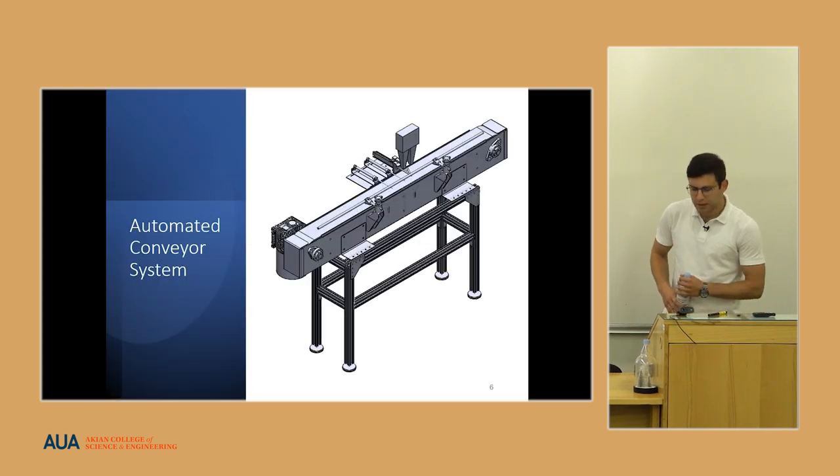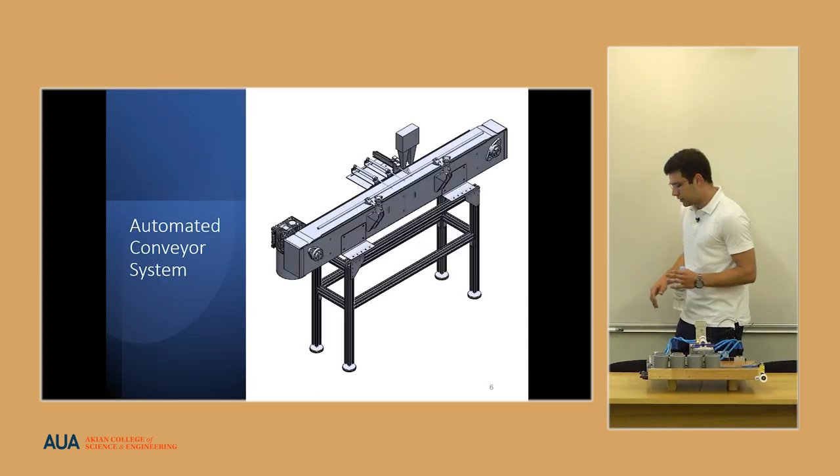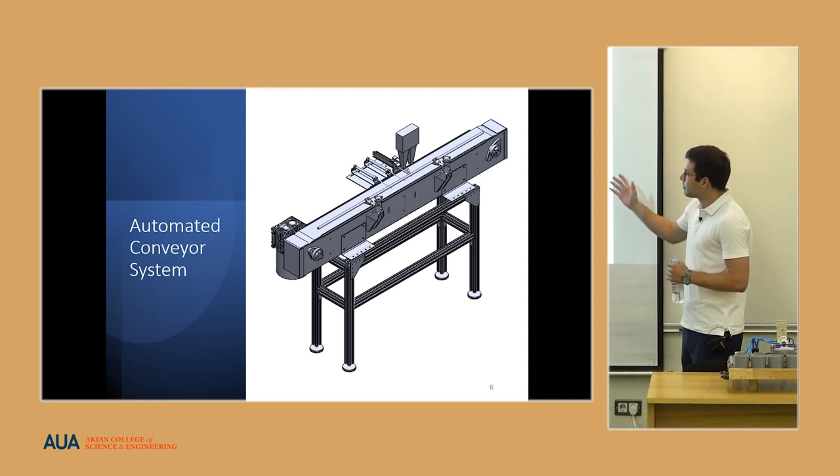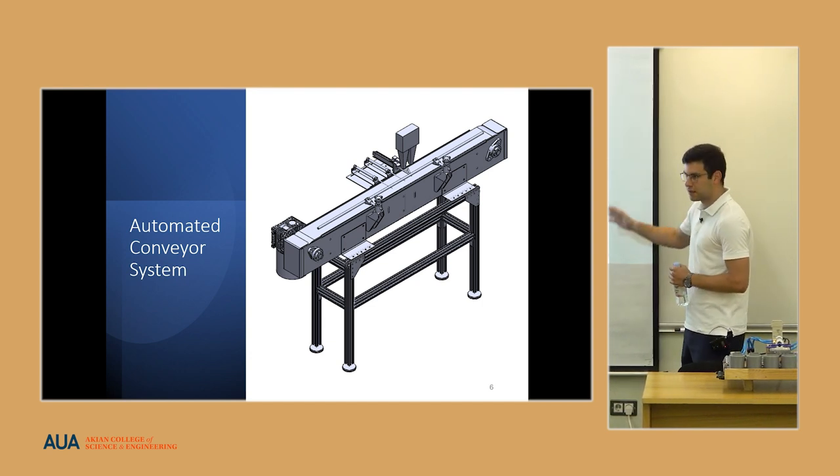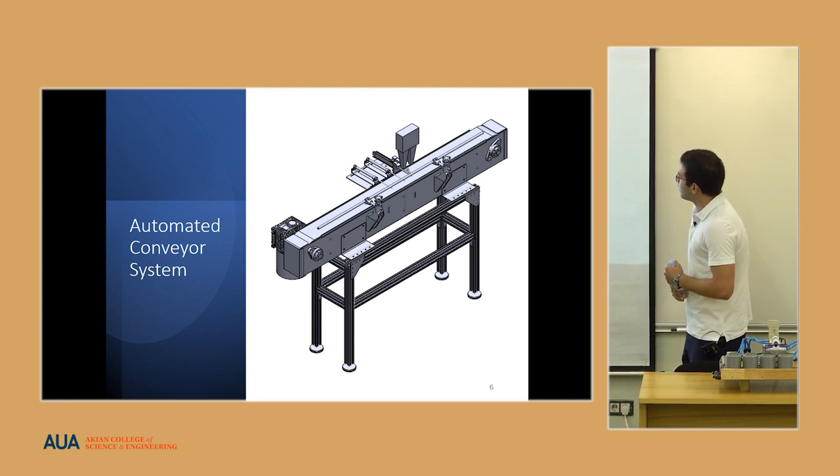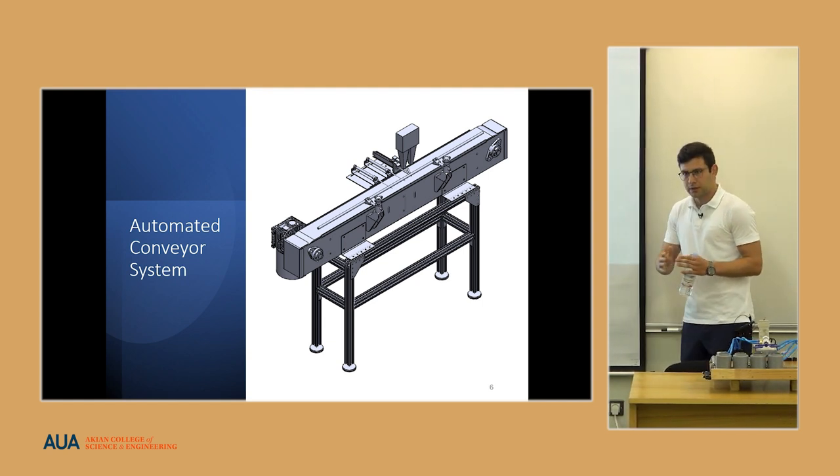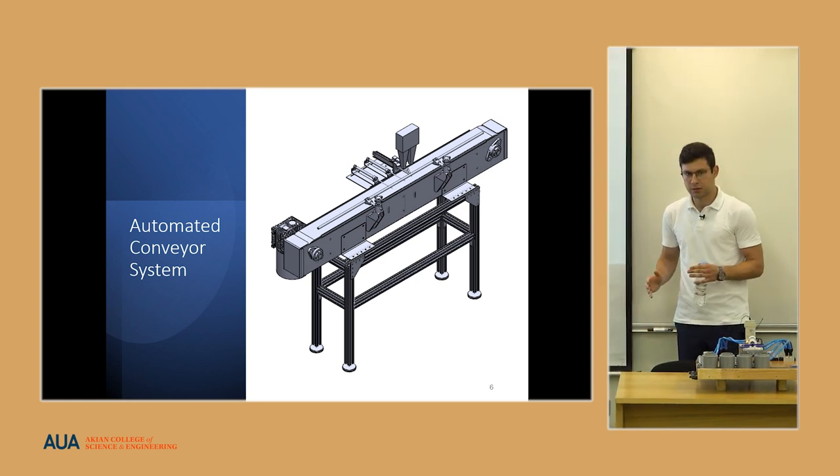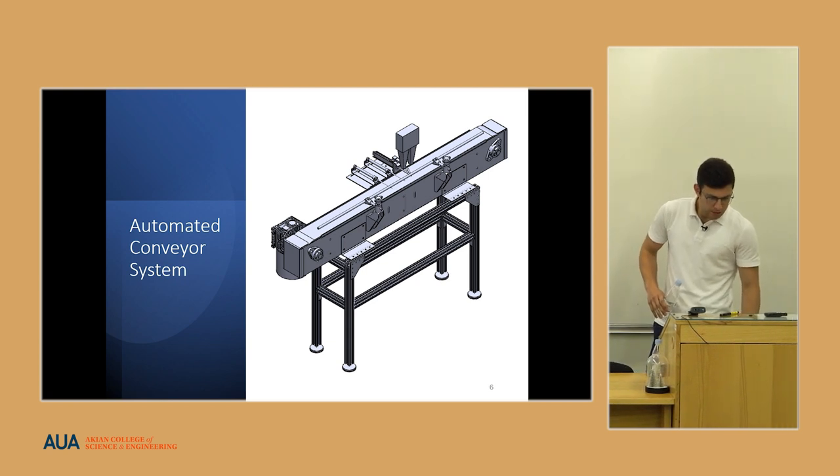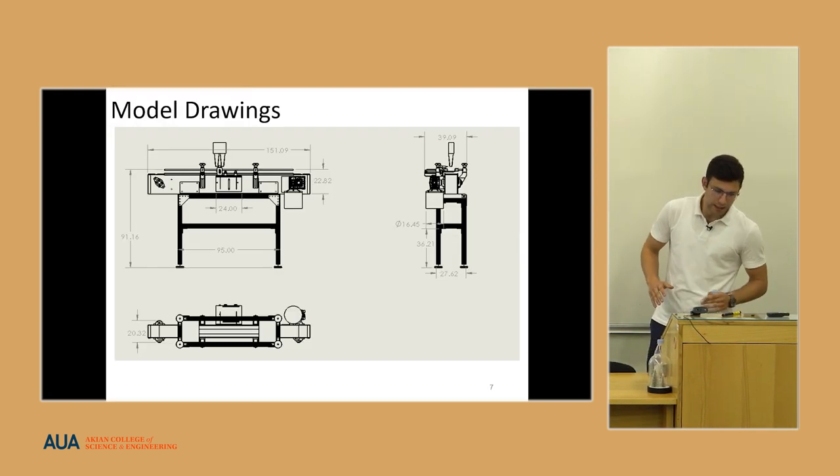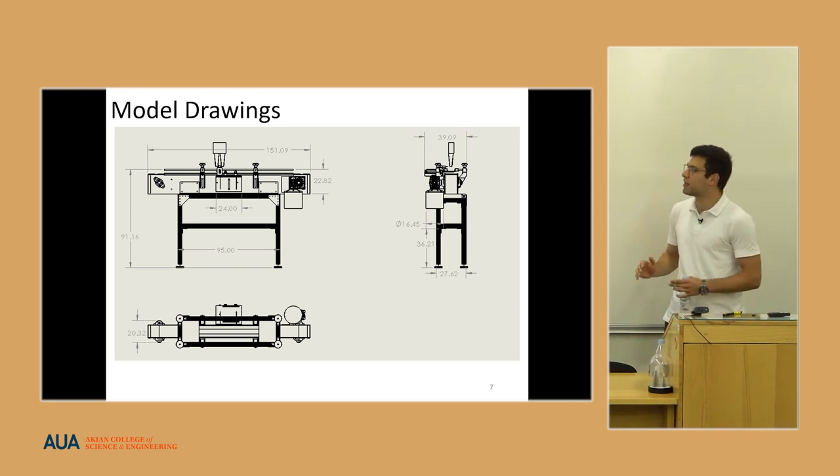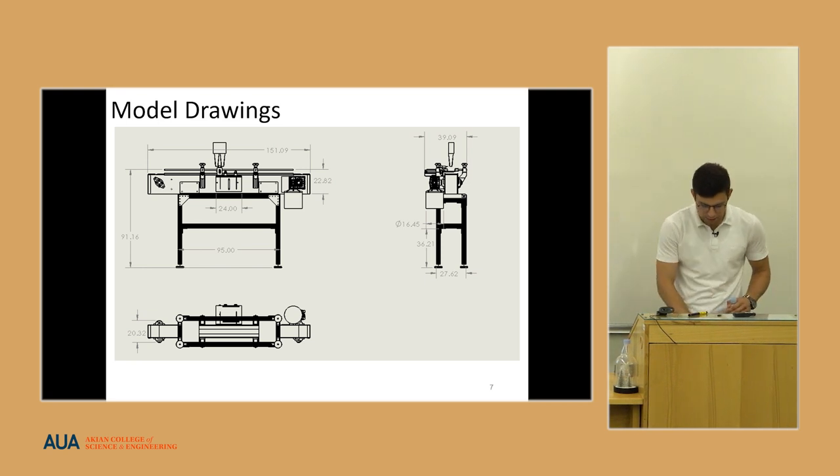Considering all these requirements and understanding all the problems they had, I designed the automated conveyor system which you can see. This is the final view of the system which is designed in the SolidWorks environment with real life dimensions and materials. The dimensions are 150 centimeters long and 40 centimeters width and it has about 90 centimeters height which can be changed, and I will speak about it later.